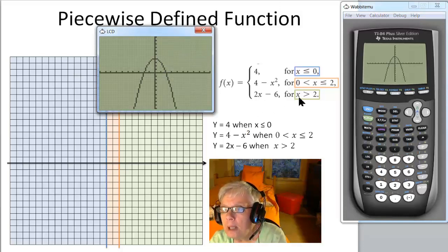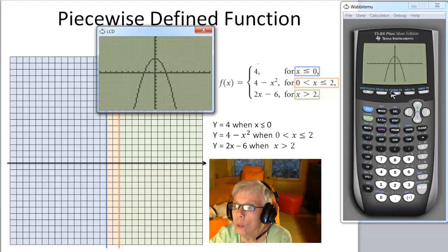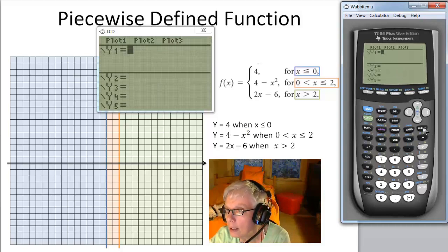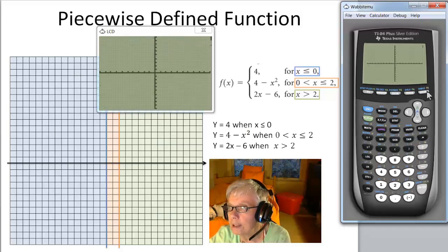Now, from the green part of the domain, from x greater than 2, or x to the right of 2, we're going to graph the line 2x minus 6. So let's clear. And now we're going to say 2x minus 6 graph.